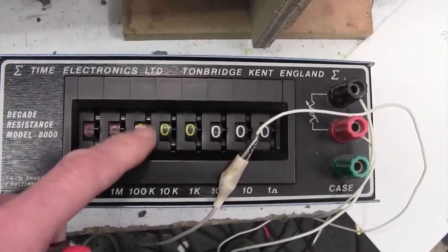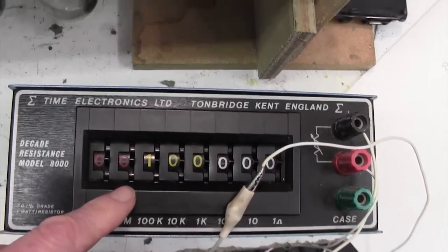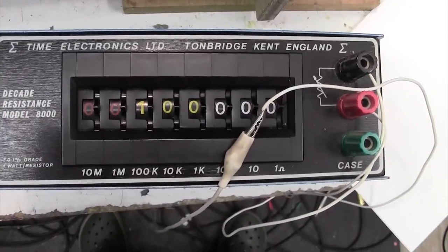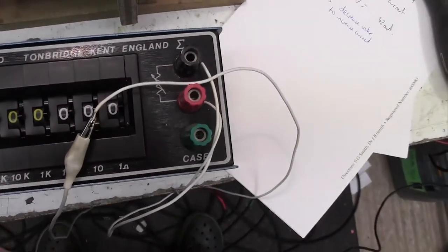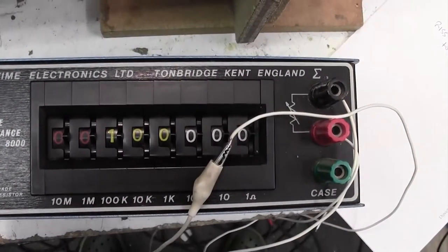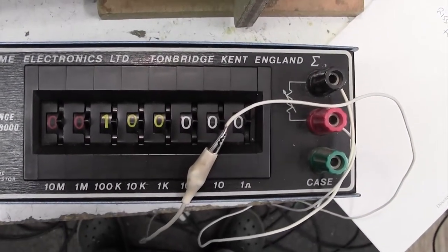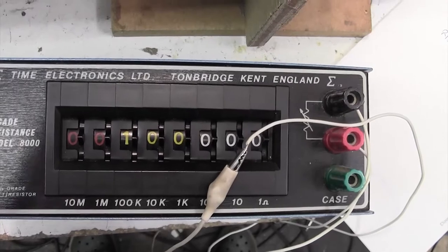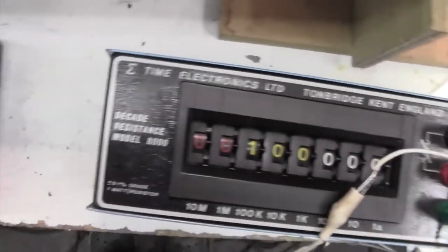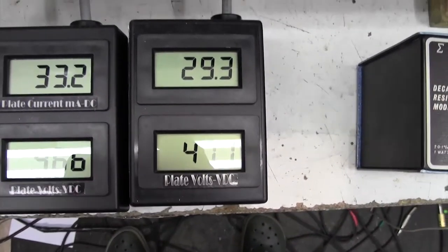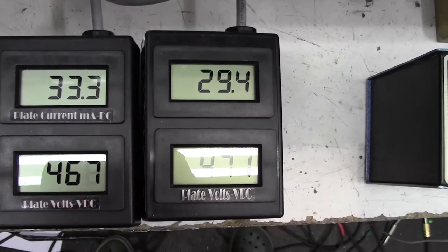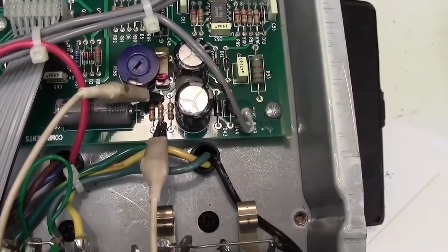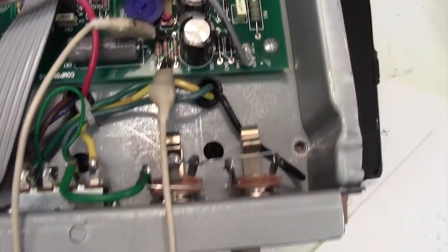This allows you to dial in any value of resistor that you want. So I'm going to croc clip that across the R155, then we're going to dial in some values and see if we can get this bias current up to about 40mA. Here we go. I've got my croc clips across R155.